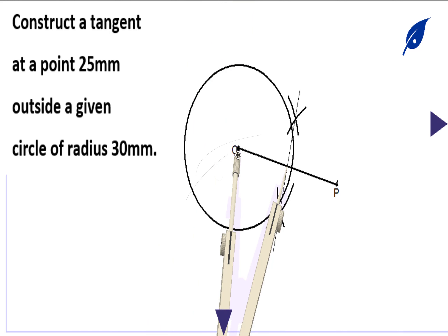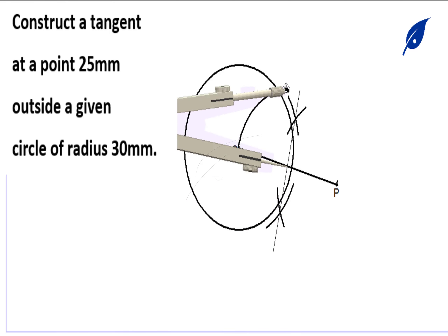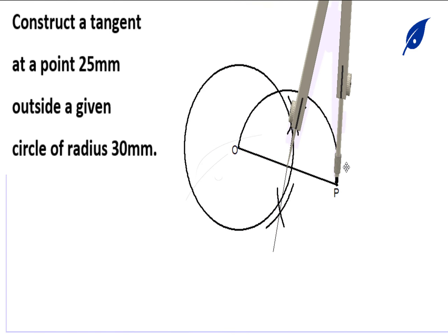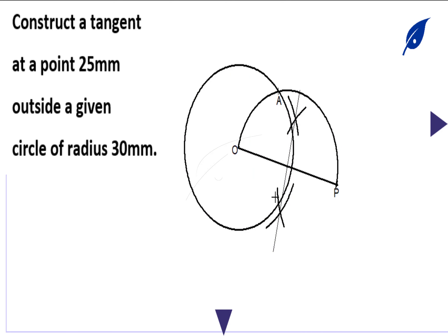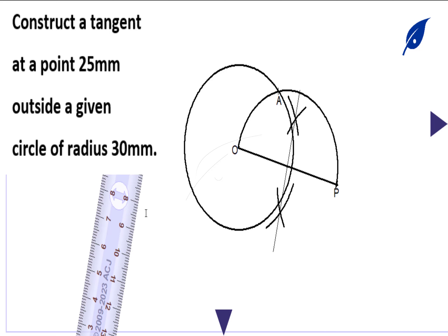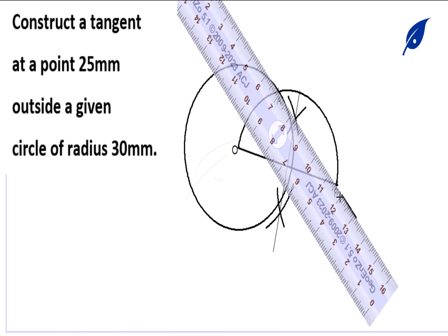After getting the bisector line and the midpoint, place the pair of compasses at the midpoint to draw a semicircle on the line OP. The point where this semicircle touches the given circle, we call it A. The tangent we are creating will pass from the point P through A, which is the point where the tangent touches the circle.